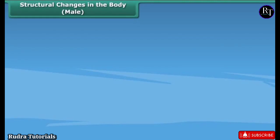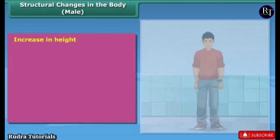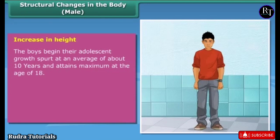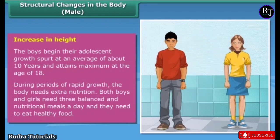Structural changes in the body include increase in height. Boys begin their adolescent growth spurt at an average of about 10 years and attain maximum height at the age of 18. During periods of rapid growth, the body needs extra nutrition — both boys and girls need three balanced and nutritional meals a day and should eat healthy food.